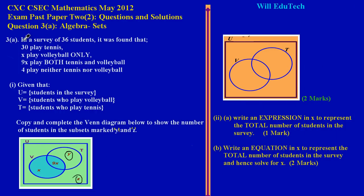In this lesson we're going to look at the solution to question 3a on the May 2012 CSEC mathematics paper. This is a typical algebra sets question. It states: in a survey of 36 students, it was found that 30 played tennis, X played volleyball only, 9X played both tennis and volleyball, and 4 played neither. The universal set U is the students in the survey, V represents volleyball players, and T represents tennis players. They're asking us to copy and complete the Venn diagram to show the number of students in the subsets marked Y and Z.